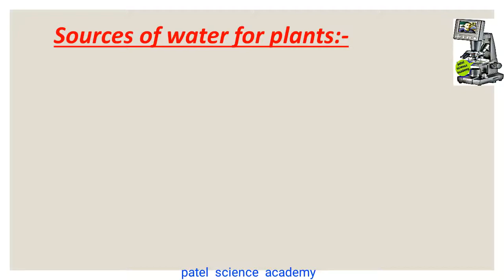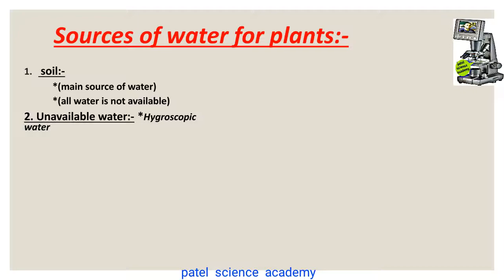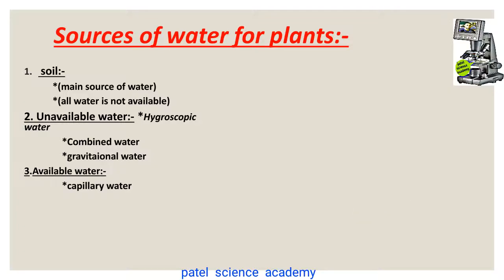Before we go in the depth of this chapter, I would like to explain the different sources of water for plants. In this world, the different sources include soil. The main source of water can be considered as soil. Not all water available under the soil surface is available for the plant body, but maximum water is available for plant use. The unavailable water is called hygroscopic water, and it involves combined water and gravitational water. The available water for the plant includes capillary water.